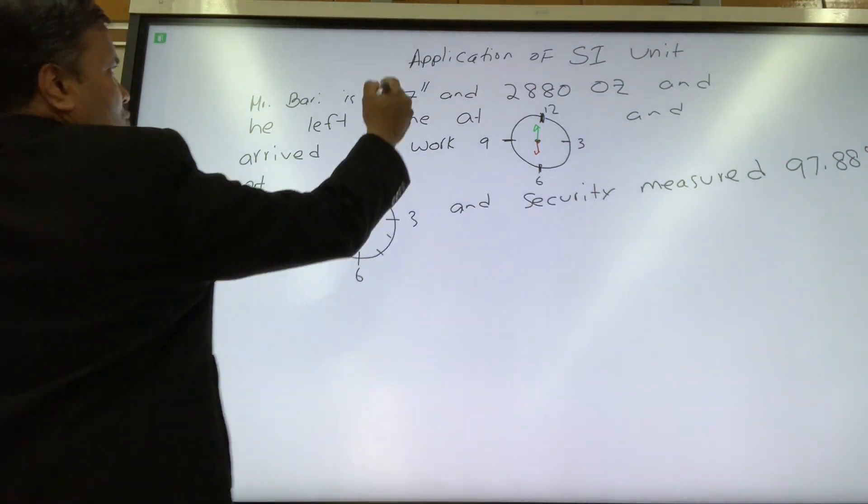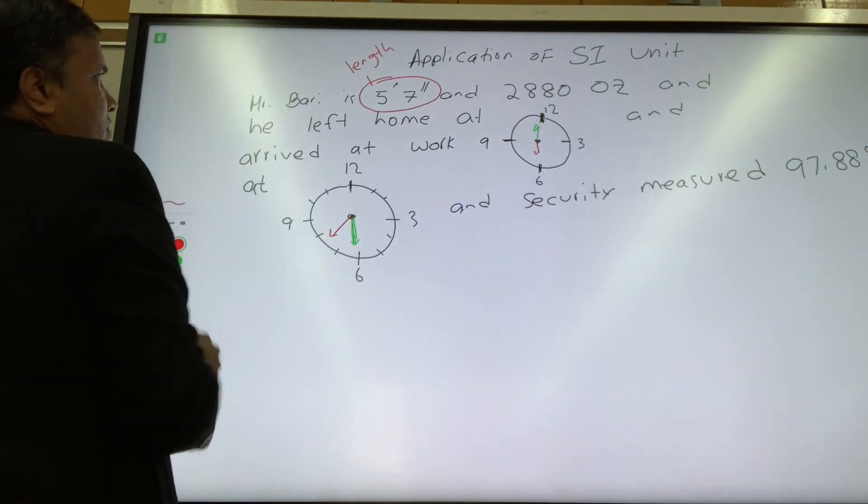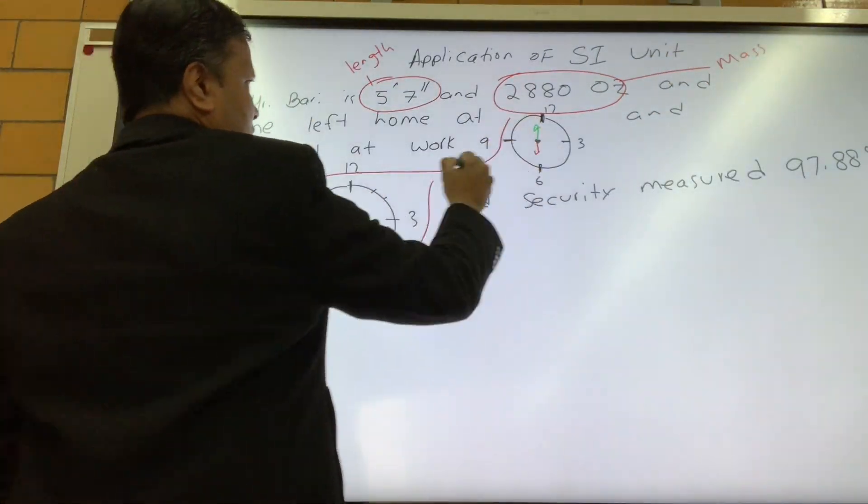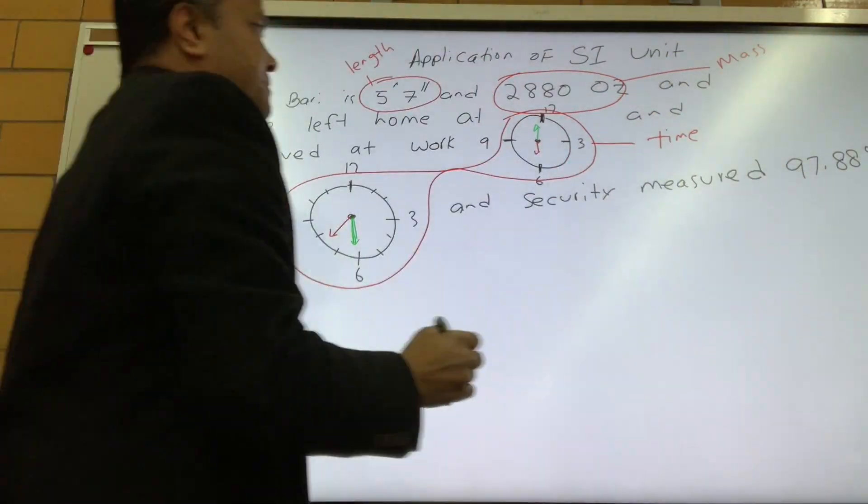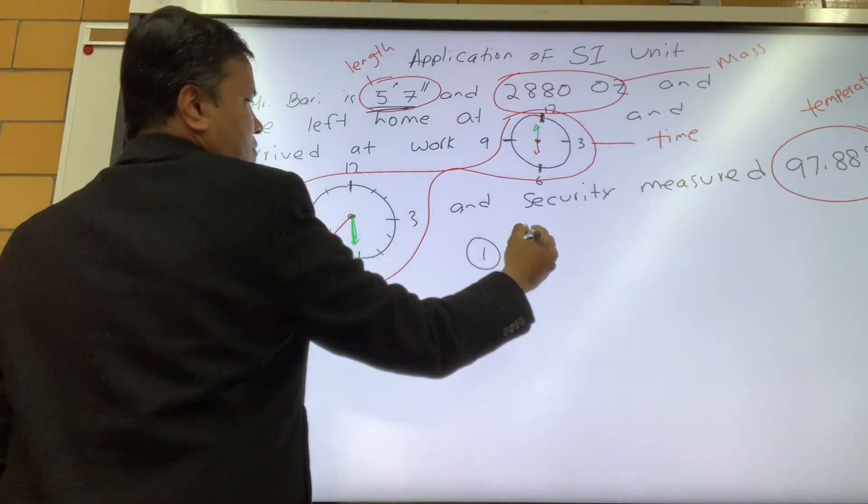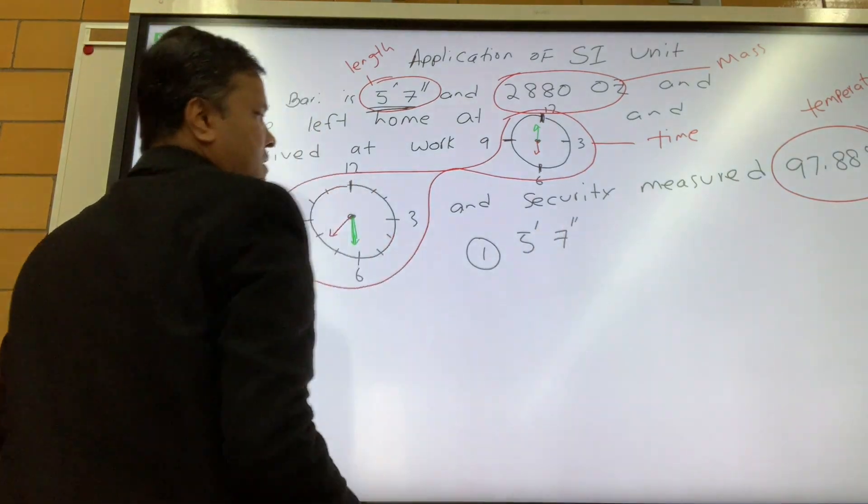So how many fundamental quantities represented in this problem? So let's circle all the fundamental quantities: length, mass, elapsed time, and temperature. So there are four fundamental quantities represented in this problem.